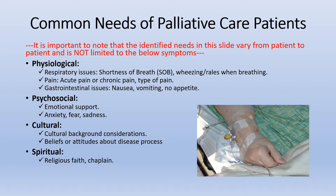Physiological needs of a palliative care patient can include respiratory issues, shortness of breath, wheezing, pain — both acute or chronic — and it's important to understand what type of pain they have. Are they having gastrointestinal issues? Are they nauseous, vomiting, or lacking appetite? Psychosocial issues to consider include emotional support — is there a family member or caregiver present? Are they experiencing depression, anxiety, fear, or sadness? It's also important to explore cultural and spiritual considerations: do they need a chaplain, a member of the clergy, or do they have a religious faith they'd like to incorporate into their palliative care treatment?